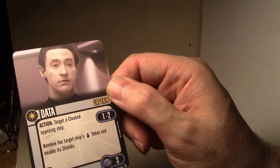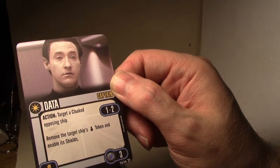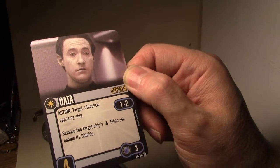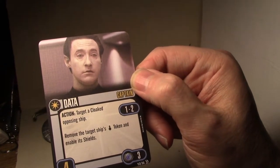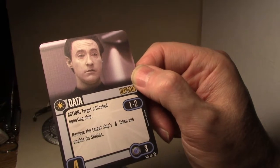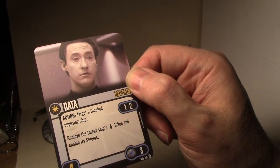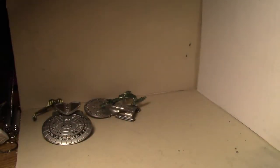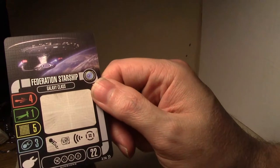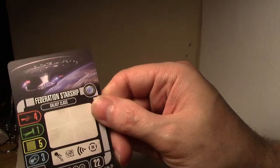Captain Data. Target a cloaked opposing ship. Remove the ship's cloaked token and enable its shields. That's a lot less complex than the other data from the Sutherland. That's pretty simple. Action. You're no longer cloaked. Have a nice day. Which would be really good against interface generators. For sure. So, here is the generic galaxy class for 22 points. Very nice. Very nice. Galaxy class maneuver dial.